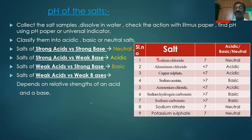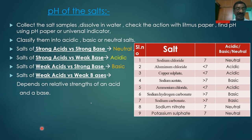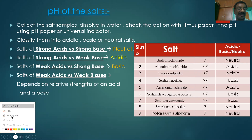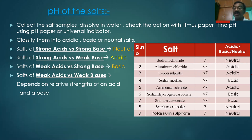Sodium Chloride, when checked with those indicators, has a pH equal to 7 — which is neutral. Ammonium Chloride has a pH less than 7, so it is acidic. Copper Sulphate also has a pH less than 7. Sodium Acetate is basic, and Ammonium Chloride is acidic.